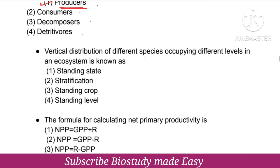Next question: Vertical distribution of different species occupying different levels in an ecosystem is known as? The options are standing state, stratification, standing crop, and standing level. The correct answer is stratification.